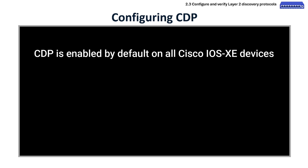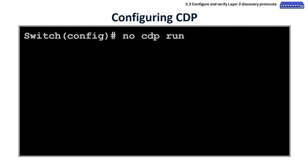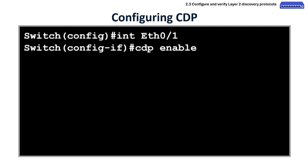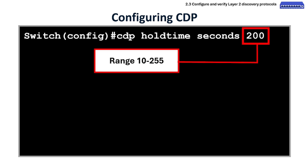Let's now configure CDP. CDP is enabled by default on all Cisco IOS XE devices such as routers and switches. To disable the protocol entirely, we use the no cdp run command in global configuration mode. To disable the protocol on a particular interface, we use the command no cdp enable. To enable CDP entirely if it was disabled, we use the cdp run command. To enable CDP on an interface if it was disabled, we use the cdp enable command. To configure CDP hold time, or the time-to-live for advertised information, we use the corresponding hold time command.